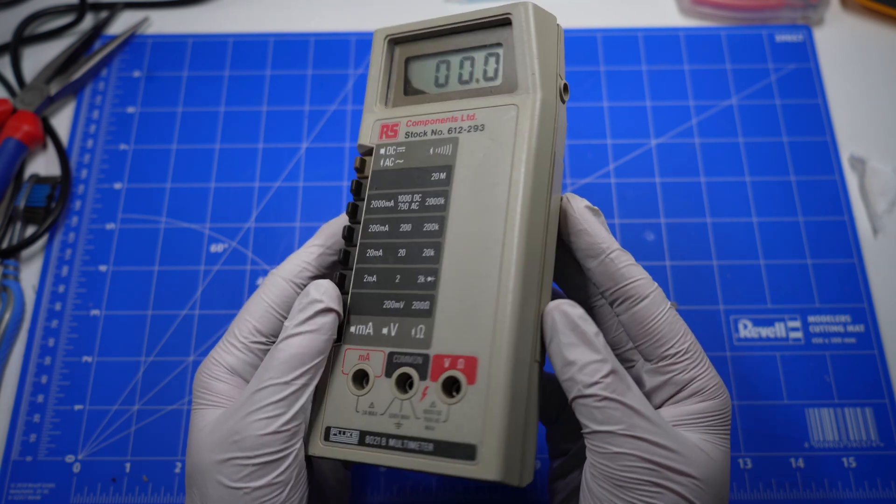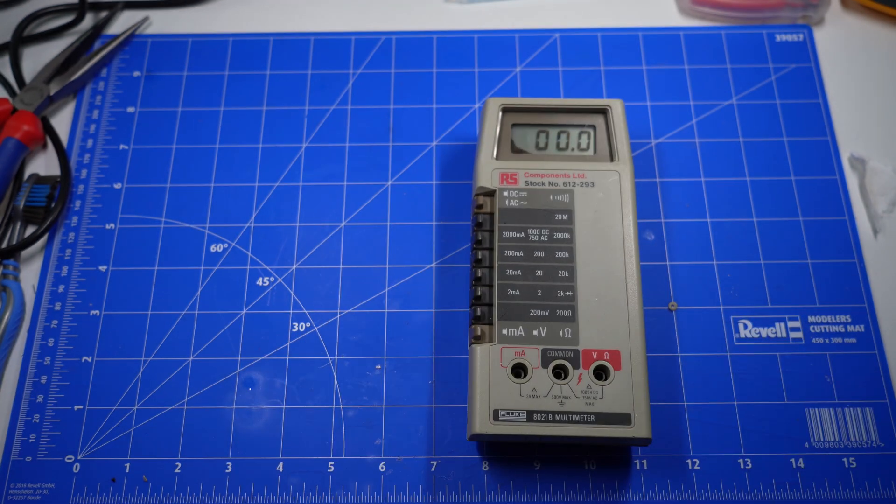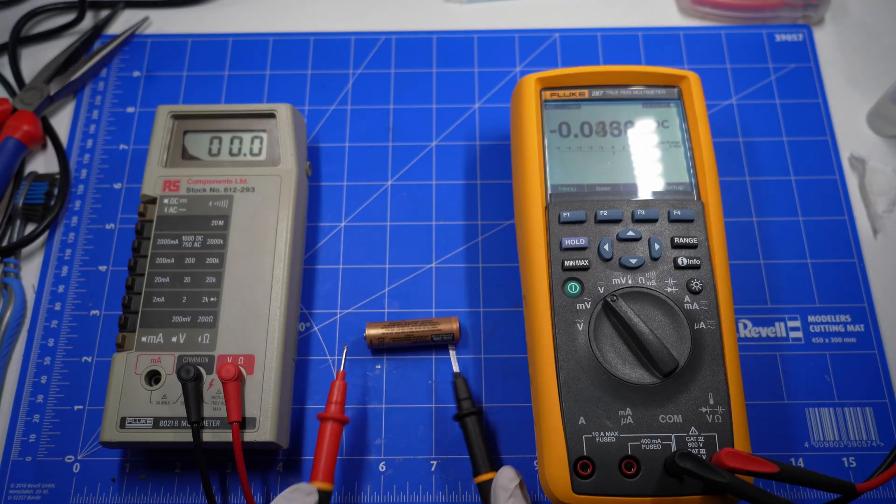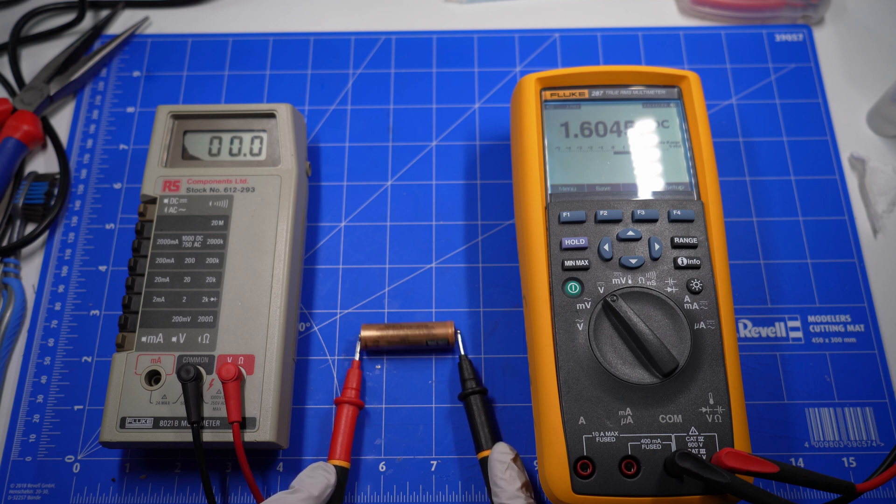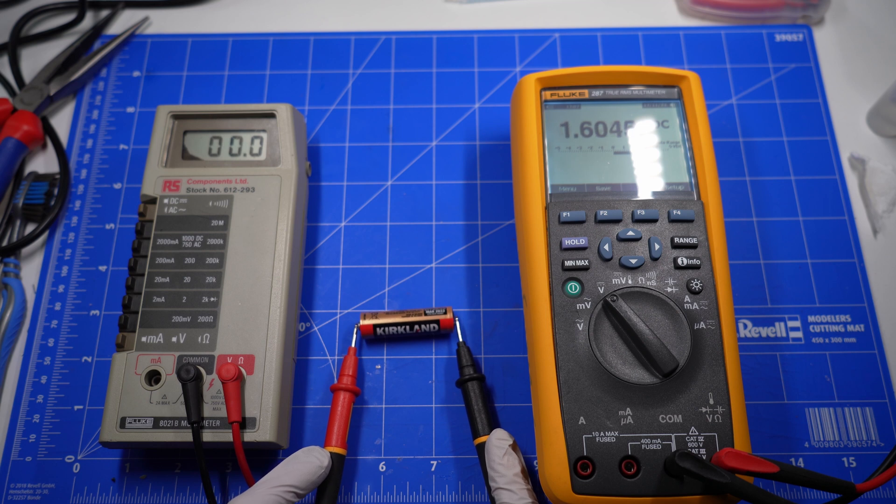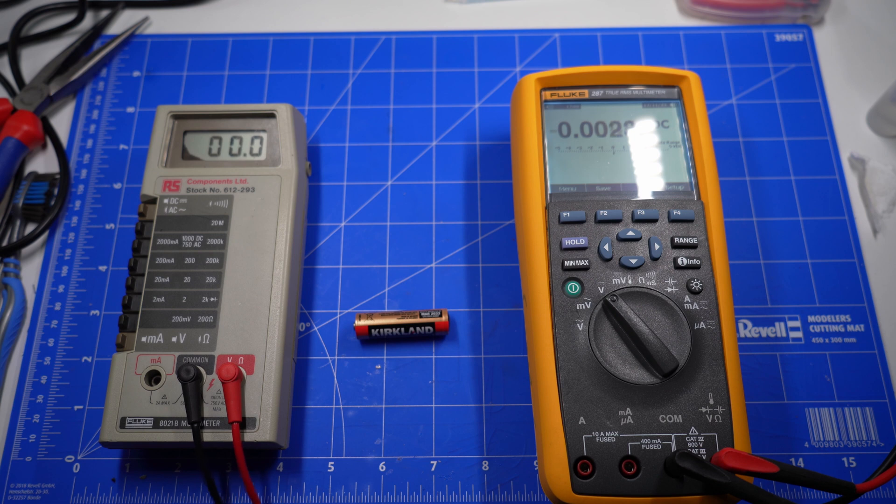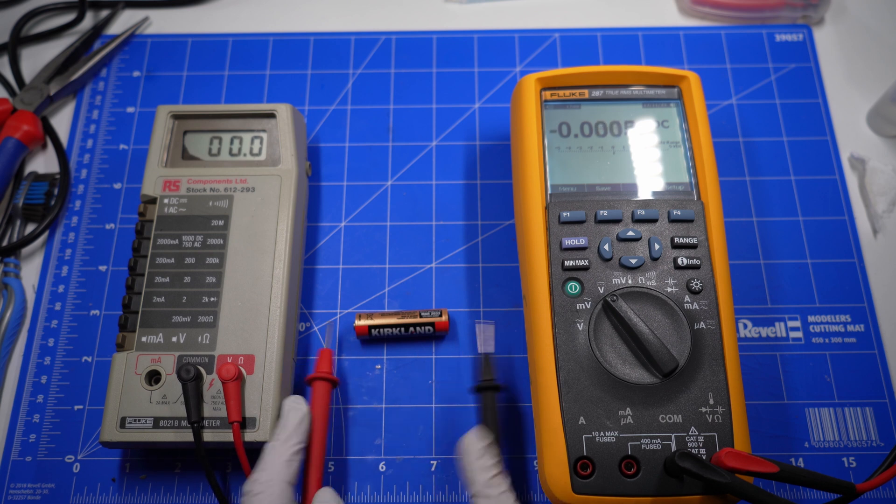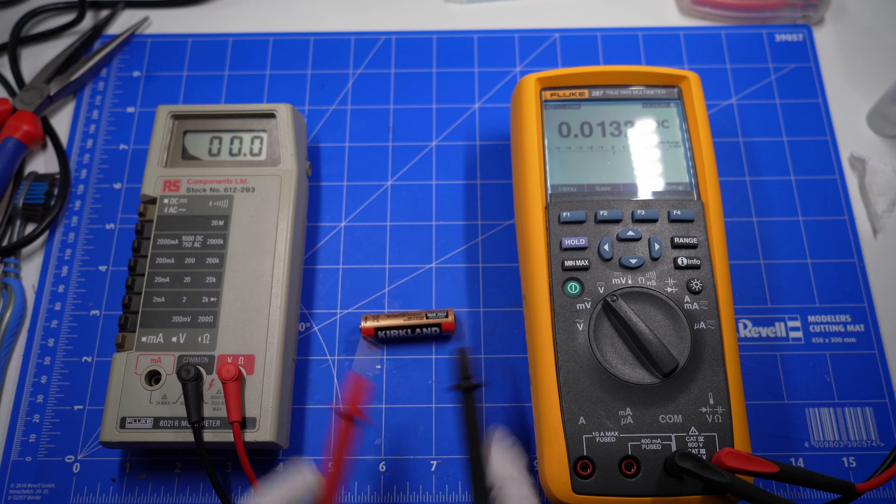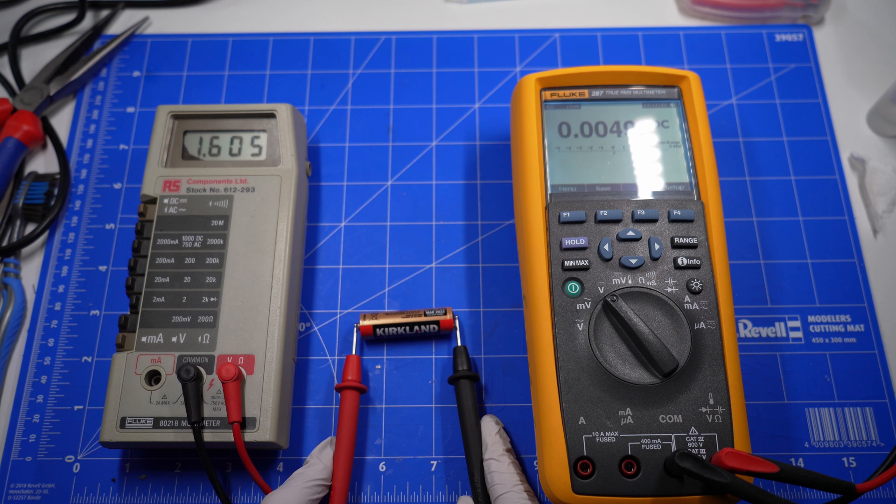And it's already on. Just comparing it to my Fluke 287. And we've got a brand new battery measuring at 1.604. Now comparing that on the Fluke 8021. Yep, I have to put it in the right range first. 1.605. Yeah, it's not bad. It's pretty much bang on.